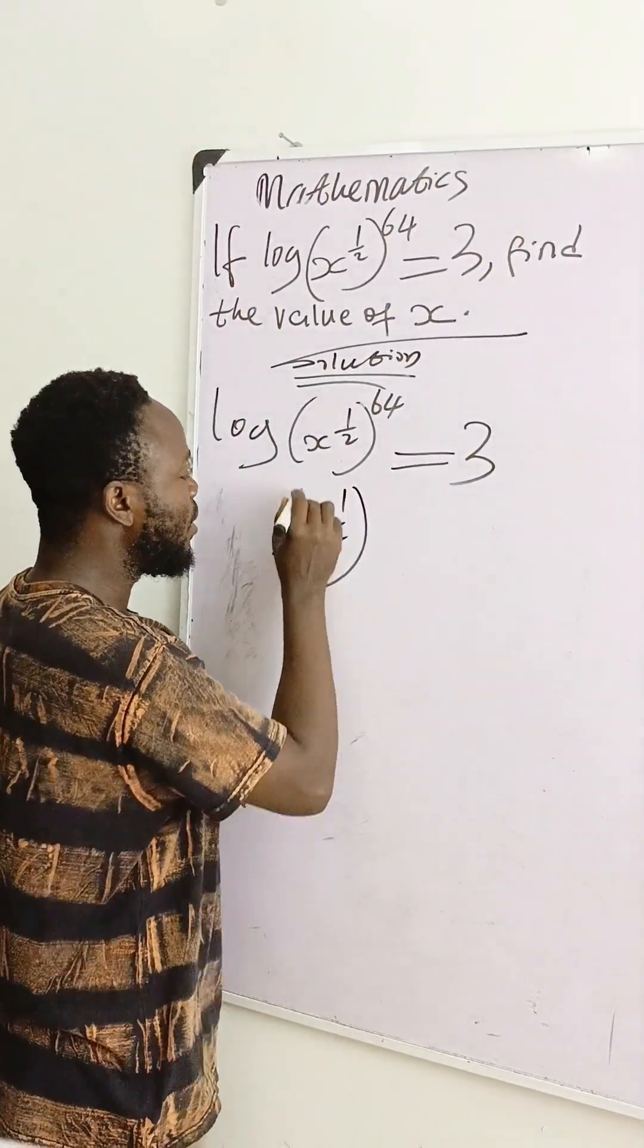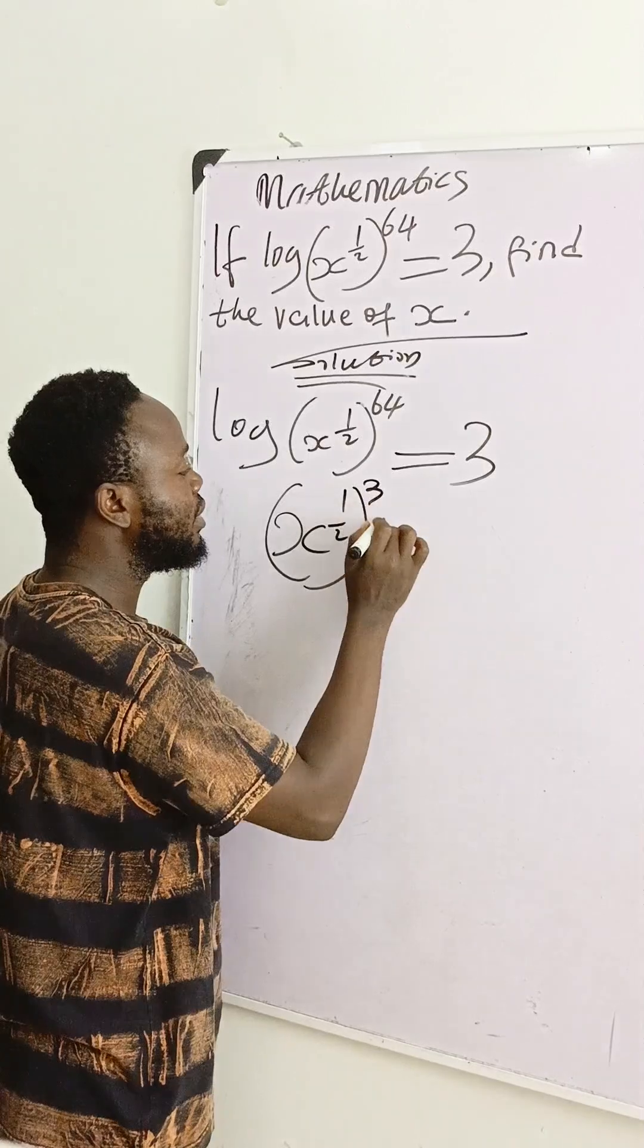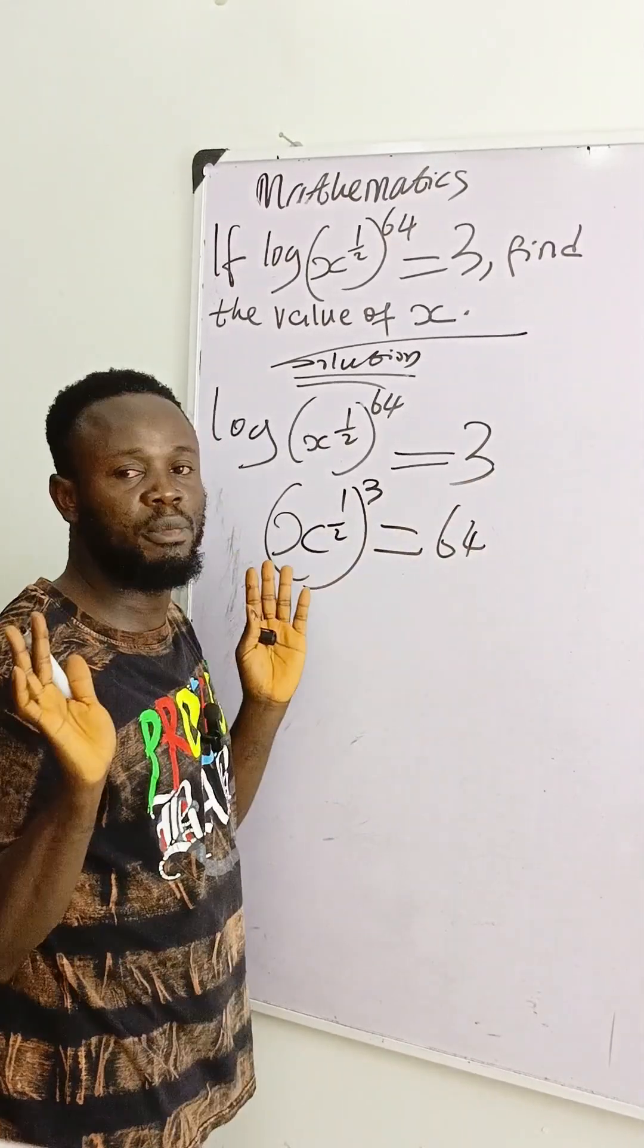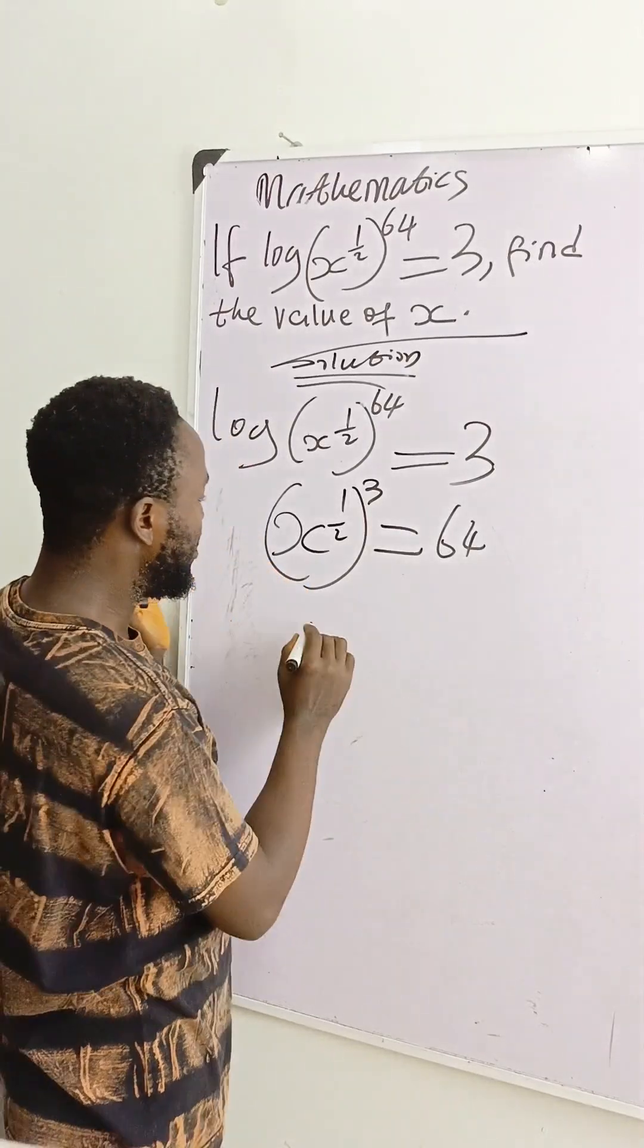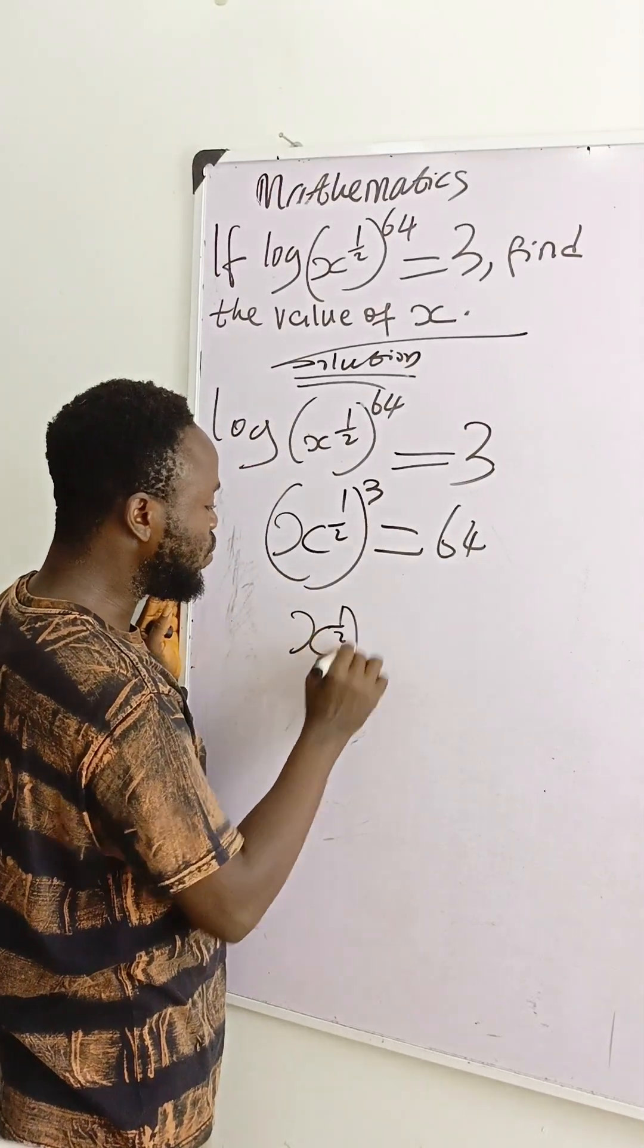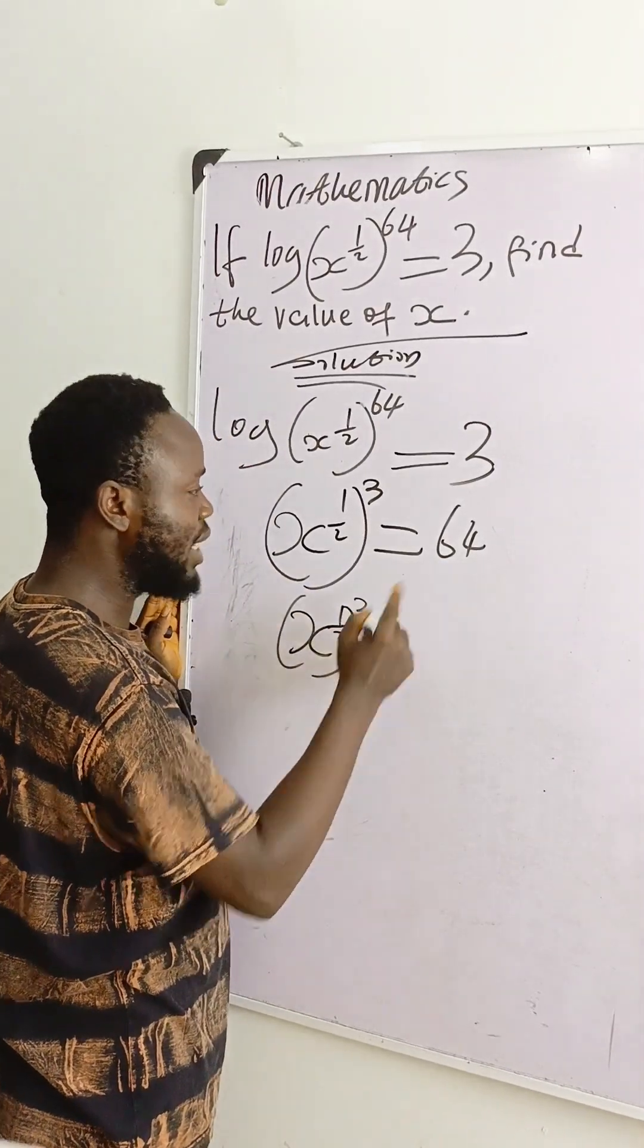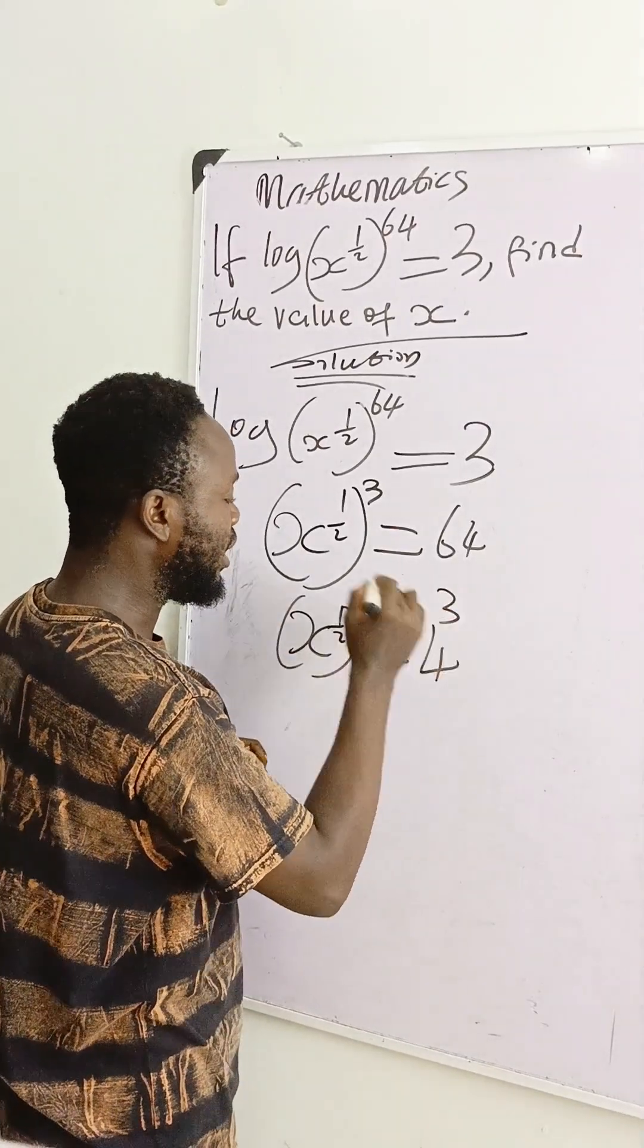Where 64 is, I write 3. Where 3 is, I write 64. Simple. At this point the work becomes very easy. I'll have x raised to power 1/2, then to power 3. You know that 64 is 4 raised to power 3.